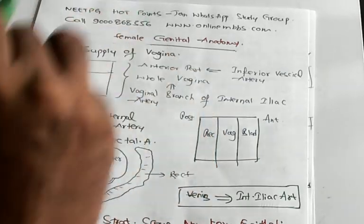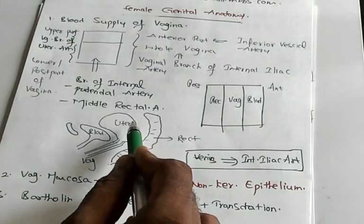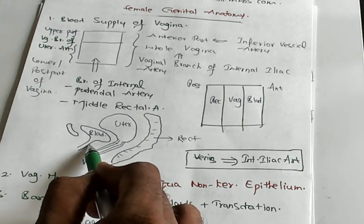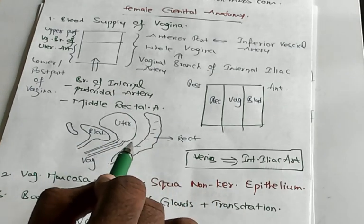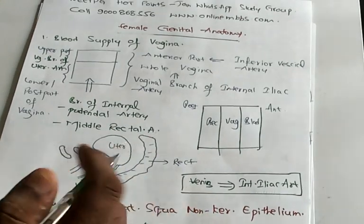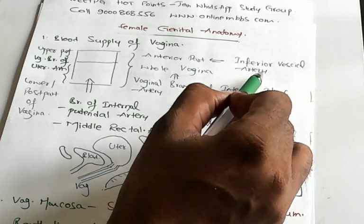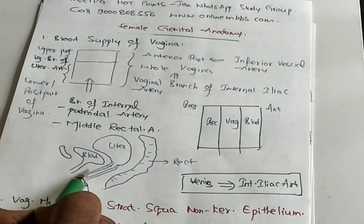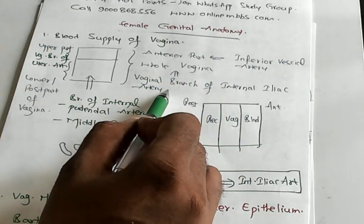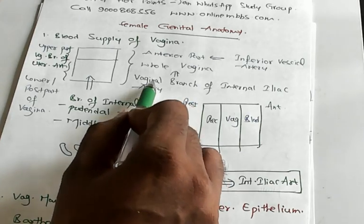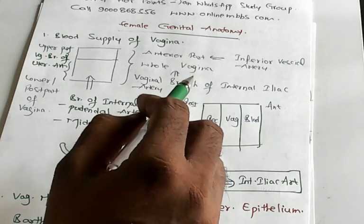Let us start, what is the blood supply of vagina? You need to have an imagination where is the vagina located. This is the vagina, this becomes uterus. Anterior to that you have the bladder and behind it you have the rectum. The anterior part is supplied by inferior vesical artery. The whole vagina, wholesale business, whole vagina is vaginal branch of internal iliac artery. Internal iliac artery is the major artery.